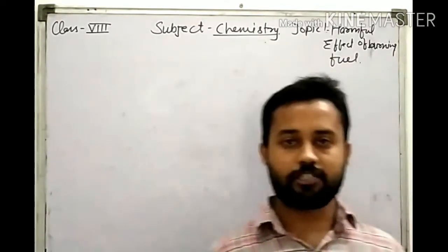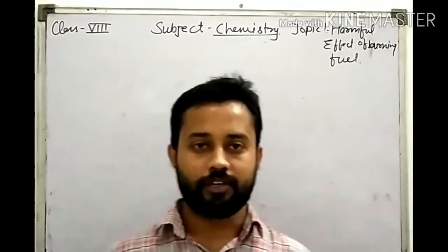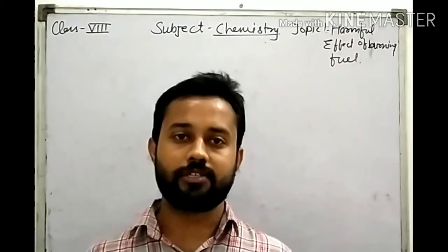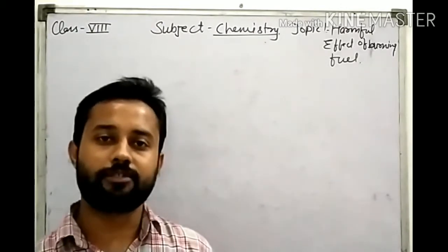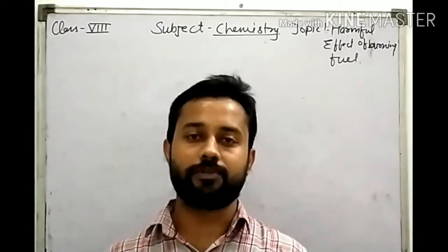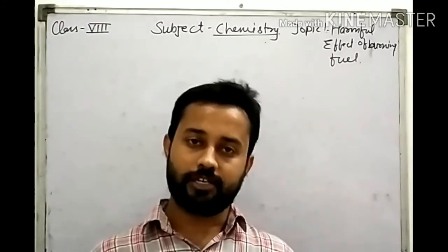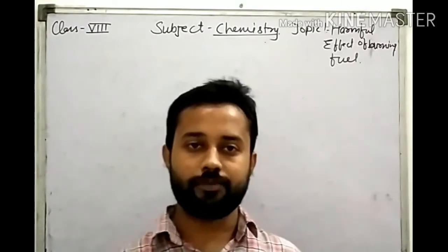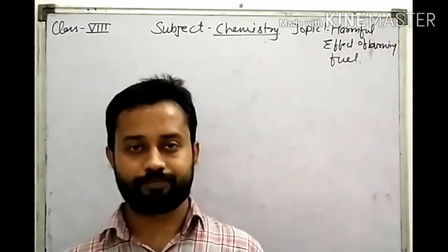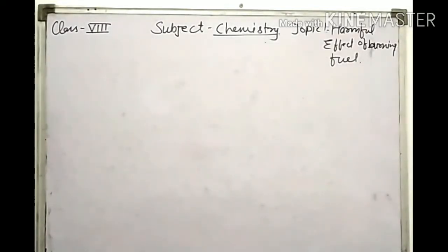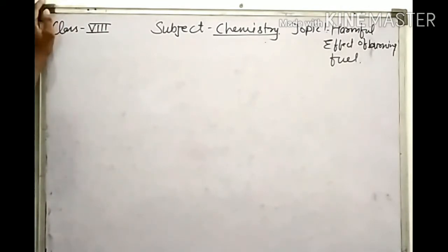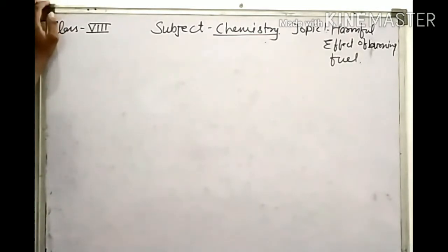Last week we didn't have classes because we were doing periodic tests and the previous chapters were covered. Metal and non-metal were given in periodic tests, and in physics it was light. After periodic tests, the topic is harmful effects of burning fuels. This is the last topic of this chapter — after this, combustion and flame will be complete. You have to understand it because this chapter is also very useful for our general knowledge.